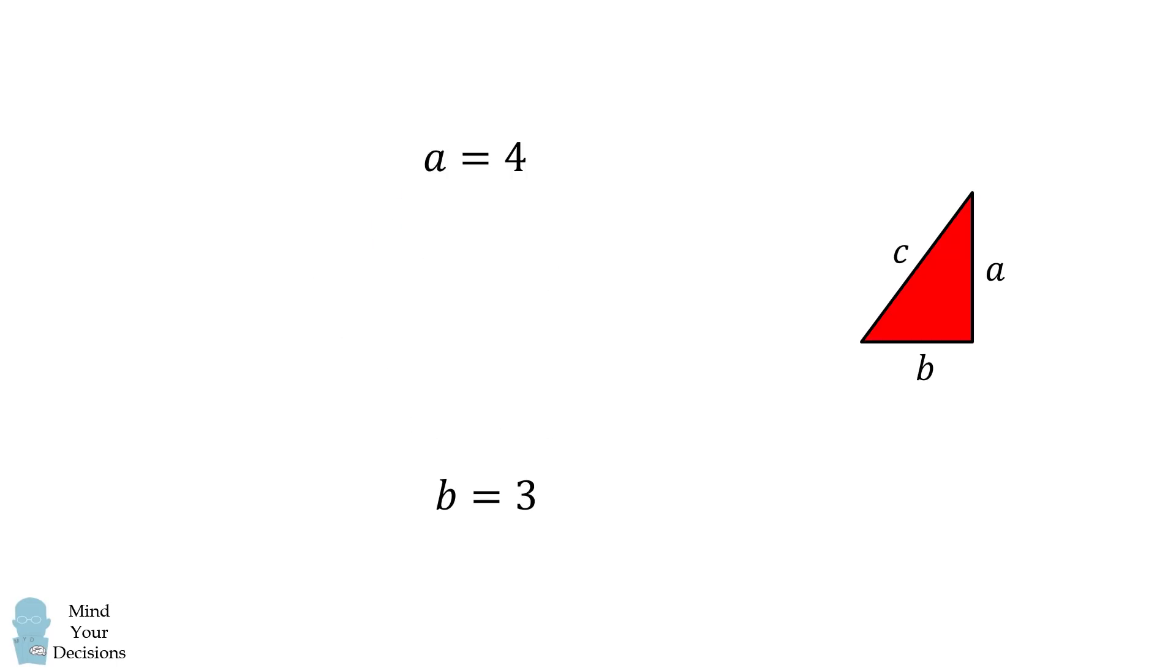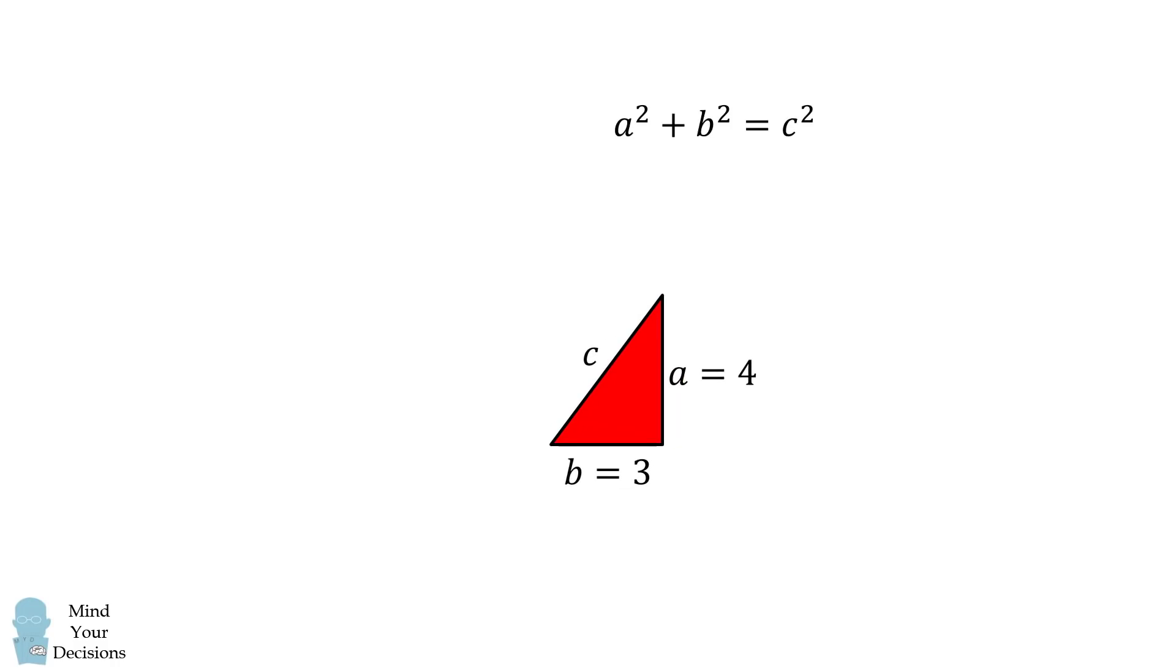We can now focus on the right triangle. Since it's a right triangle, we have a squared plus b squared is equal to c squared. This leads to the equation that 4 squared plus 3 squared is equal to 25, which is equal to 5 squared. So c is equal to 5, and c squared is equal to 25.